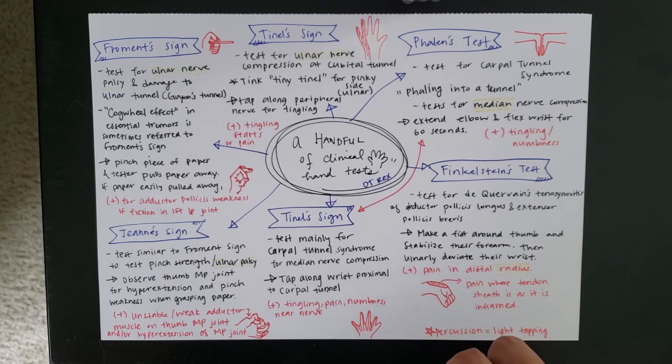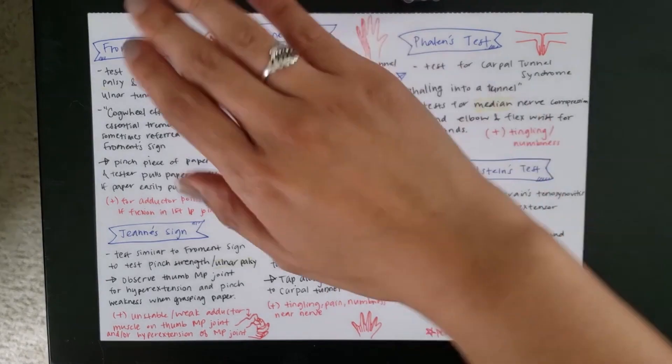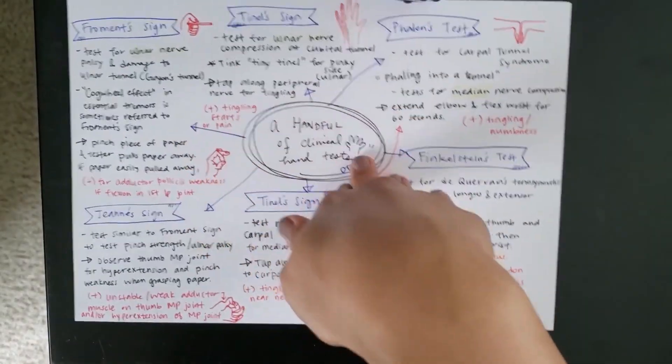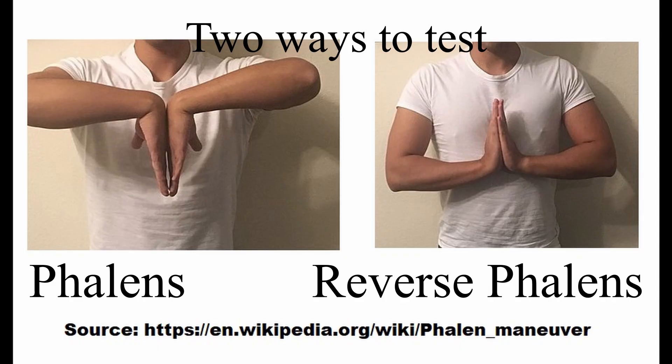And this one, as I said earlier, tests for median nerve compression. And in order to test this, what you're going to do is hold that position for 60 seconds. And if you experience any tingling or numbness, then you have a positive Phalen test. Falling into a tunnel to test for carpal tunnel with the Phalen test. Super silly, I know.